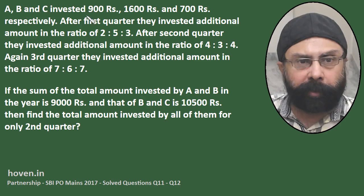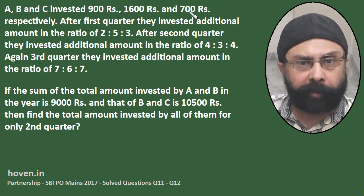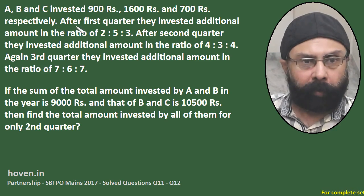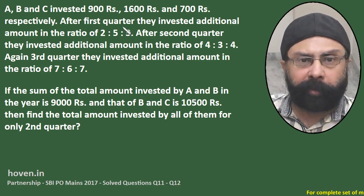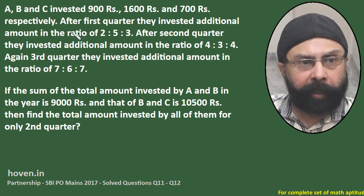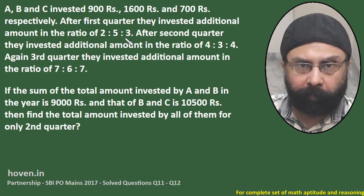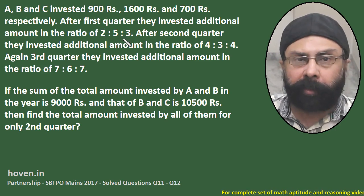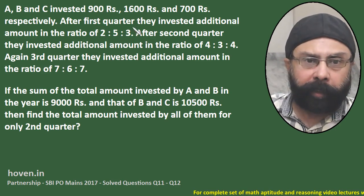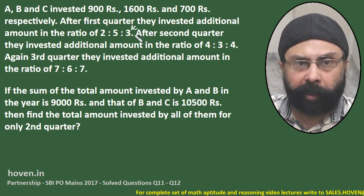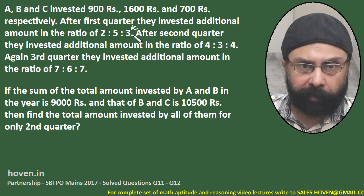A, B and C invested Rs 900, 1600 and 700 respectively. After the first quarter, they invested an additional amount in the ratio 2:5:3. Let us say k is the multiplier, so they invested 2k, 5k and 3k as the additional amount.